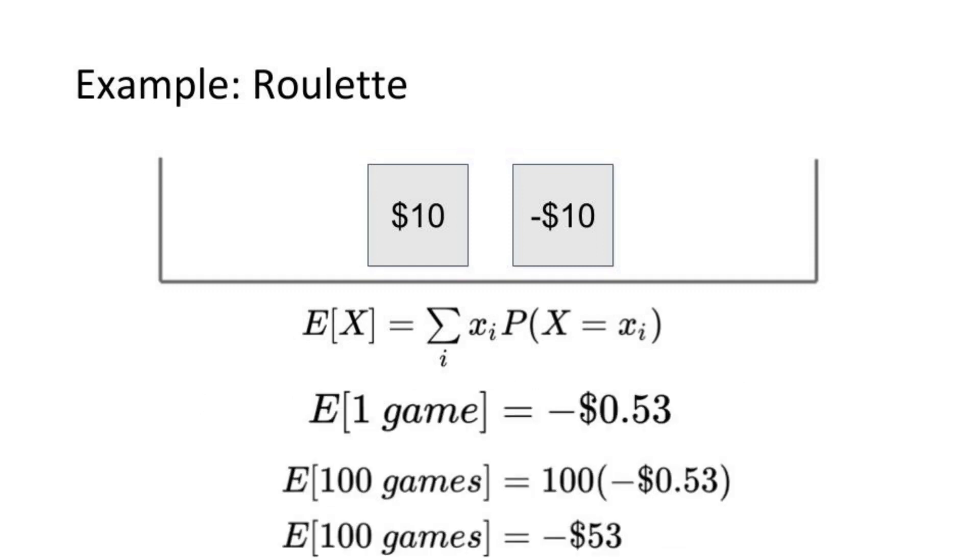And if you play this game 100 times, then you should expect to walk away with negative $53. But of course, you're not always going to walk out with exactly negative $53. There's a distribution on the random variable.